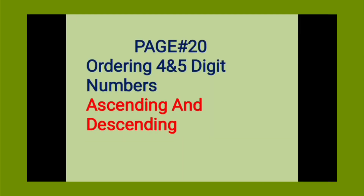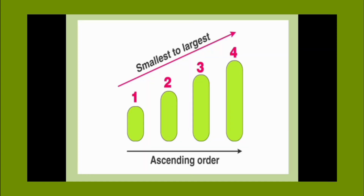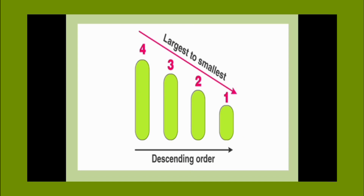Now let's learn page number 20: ordering four and five digit numbers in ascending and descending order. You have previously studied ascending and descending order — let's have a review. Ascending order means smallest to largest, and descending order means largest to smallest.